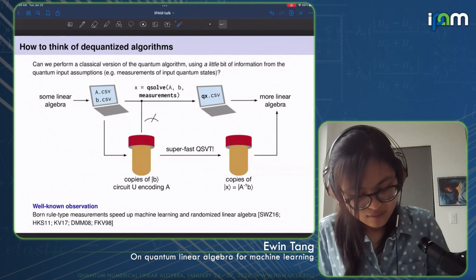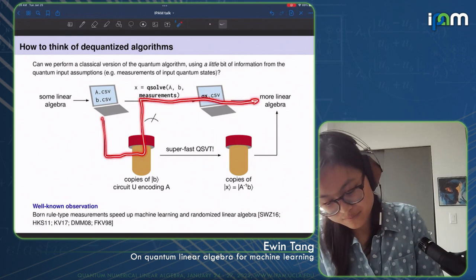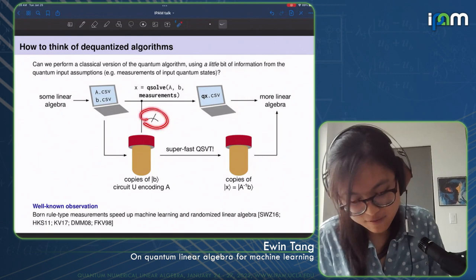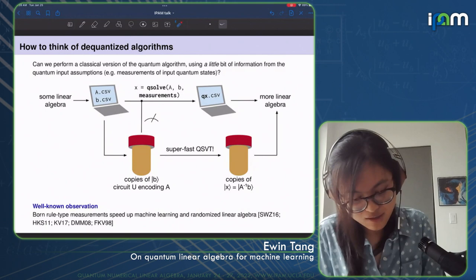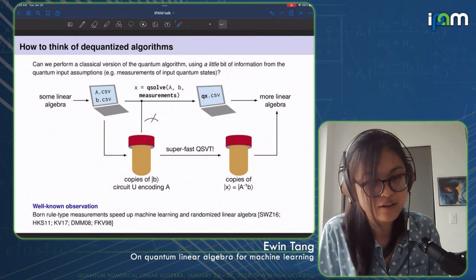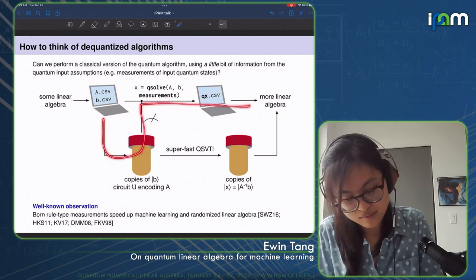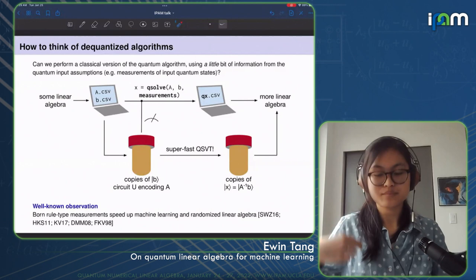The interesting thing is that these types of algorithms are actually somewhat well studied in the classical numerical linear algebra literature. The types of measurements one would get from measuring quantum states in the computational basis are importance samples, and these are well known to speed up machine learning and randomized linear algebra — in precisely the way needed to show that these classical algorithms are only polynomially slower than the quantum ones.